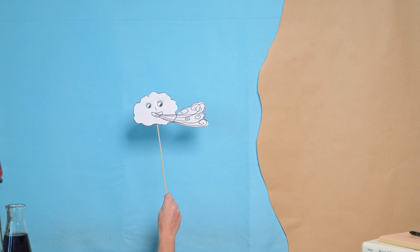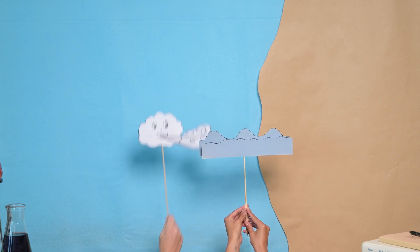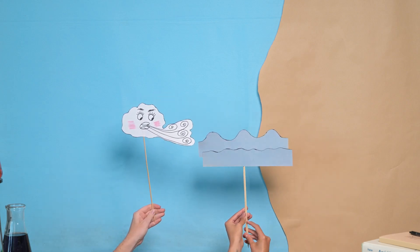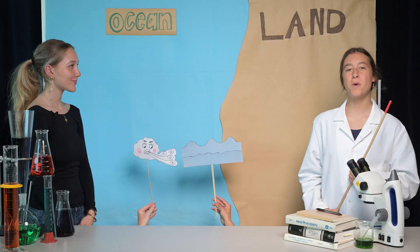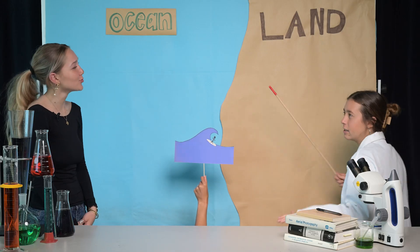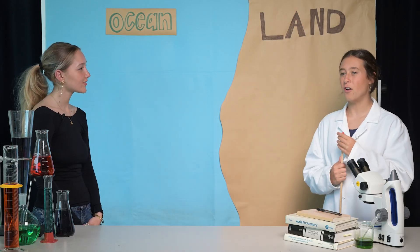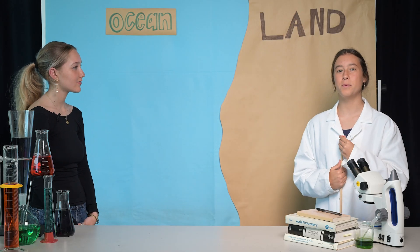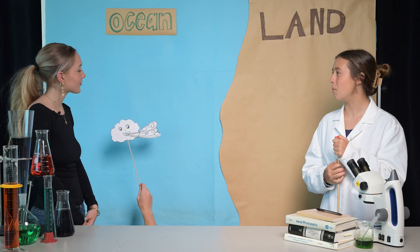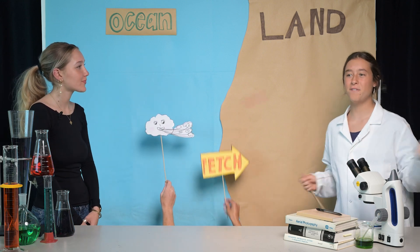Waves are formed from wind blowing over the ocean's surface. The friction of the wind over the water creates ripples. The more the wind blows, the larger these ripples get and eventually become waves big enough for us to ride. The longer the distance the wind blows over the ocean will affect how big the waves get. This is called fetch.